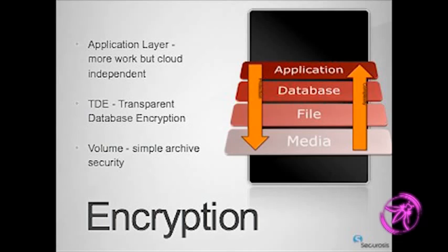What we see most often are transparent forms of encryption — either at the file system layer, such as Vormetric, or at the database layer, such as built-in encryption from IBM or Oracle. And simple volume encryption. Every single cloud provider I've been on so far works beautifully with these approaches.